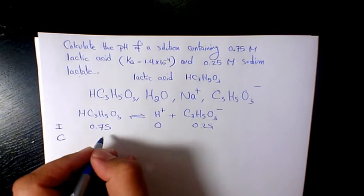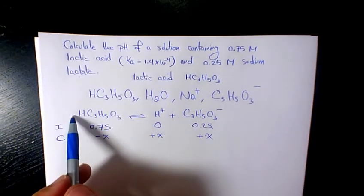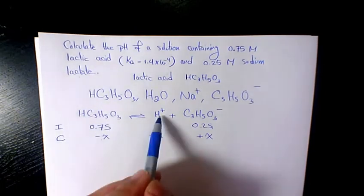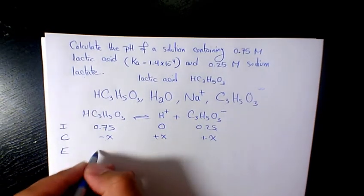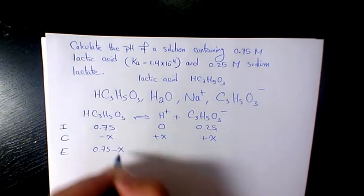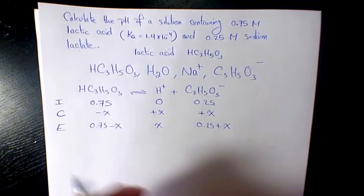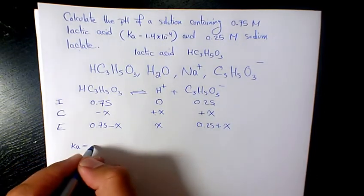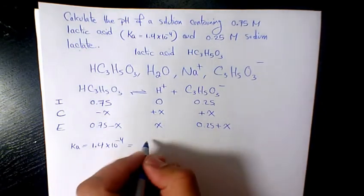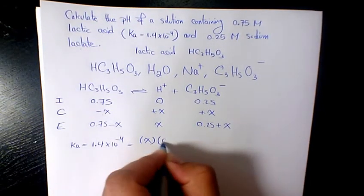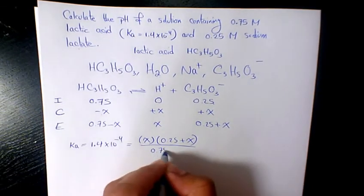C, which is change, is negative x, plus x, plus x. This one is negative because that's the reactant — it's losing. And the products are gaining, so that's why they're a plus. So E for equilibrium is going to be 0.75 minus x, x, and 0.25 plus x. So Ka, the dissociation constant, is going to be 1.4 times 10 to the power of negative 4, equals x times (0.25 plus x) divided by (0.75 minus x).